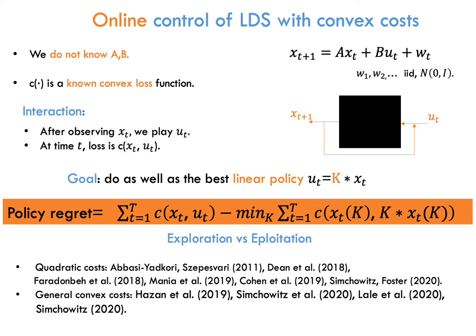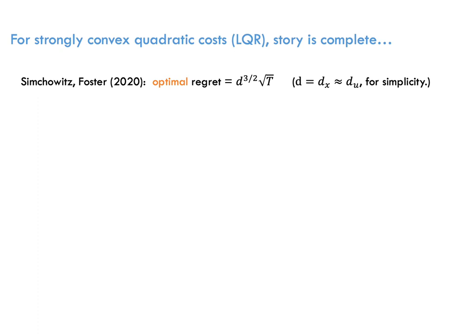In the last years, there has been intense interest for this problem, both for the case of linear quadratic regulator, which is the case of quadratic costs, and for general convex costs. The reason is that linear dynamical systems have emerged as a standard benchmark for continuous control and reinforcement learning.